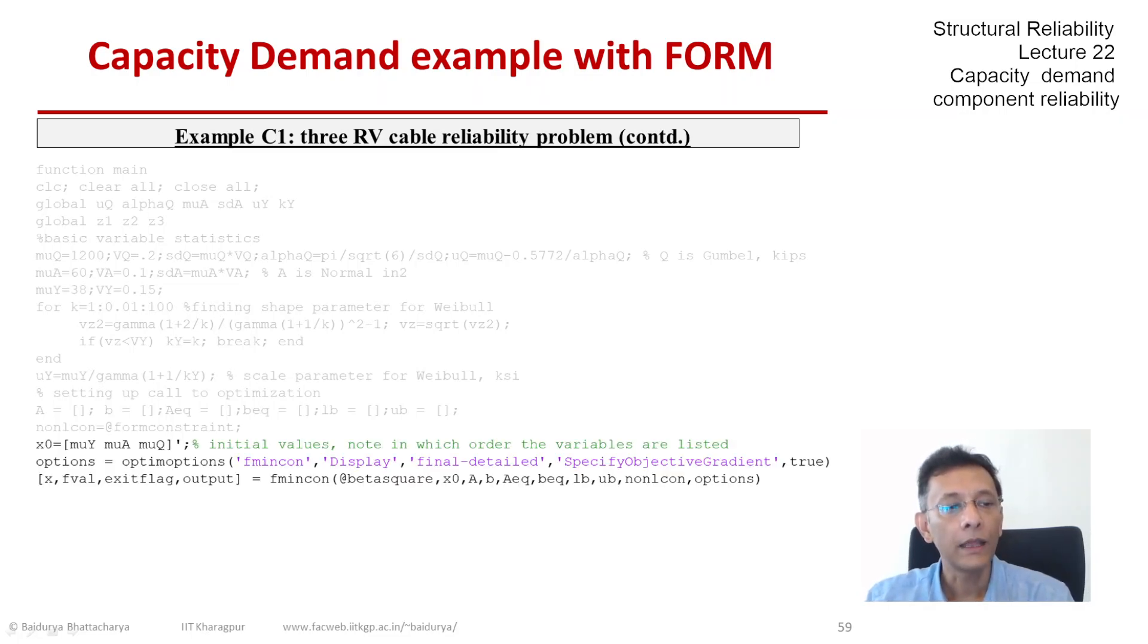We have to define the initial points, which I choose to define as the mean vector. The next lines are the various options in the fmincon. One of the things is that I have the objective gradients, so I'm going to provide them.